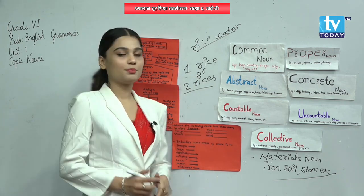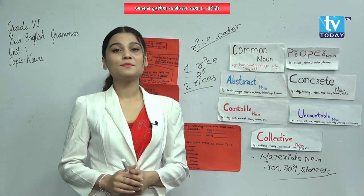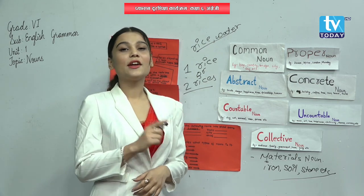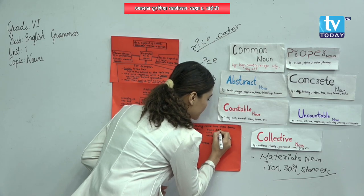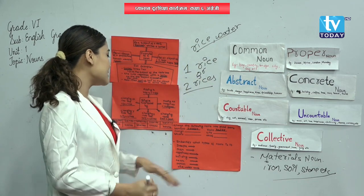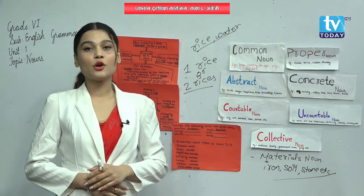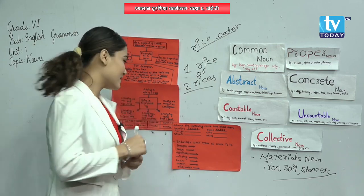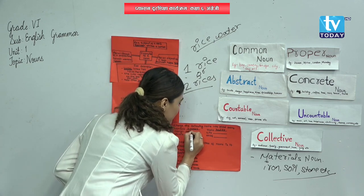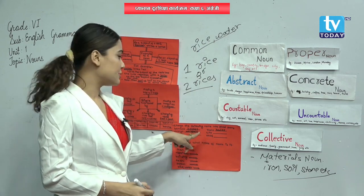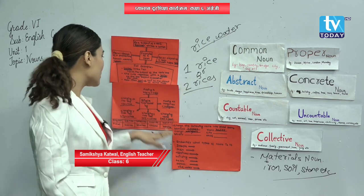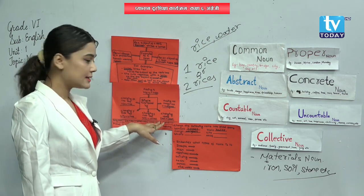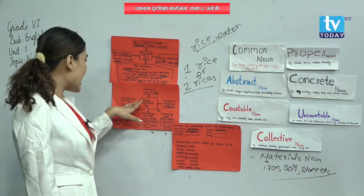Next one is city — we need to add 'ies' to change this singular noun into plural. City becomes c-i-t-i-e-s, cities. Next one is studio — we need to add 's' here, so studio becomes studios. If you are getting confused, you can look at the rules: adding 's,' adding 'es,' changing vowel, changing 'f' into 'ves,' changing 'y' into 'ies,' changing 'fe' into 'ves.'